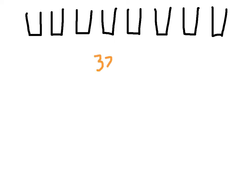Let's say that we have 32 ounces of orange juice, and we have a bunch of 6-ounce glasses. The question for the first problem is: how many 6-ounce glasses can we fill with this orange juice? We'll fill up one — there's 6 there. Another 6 ounces there, that gives us 12.